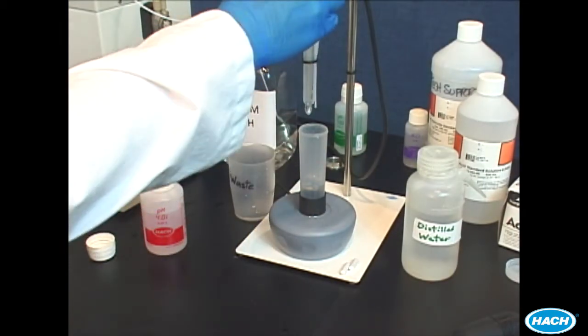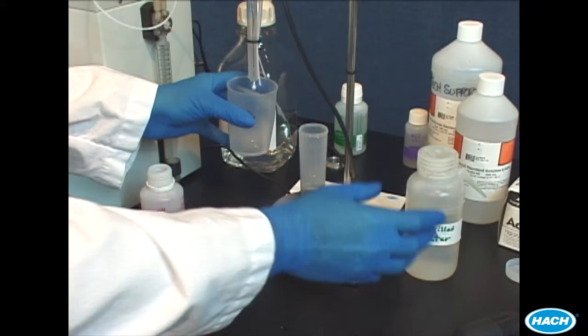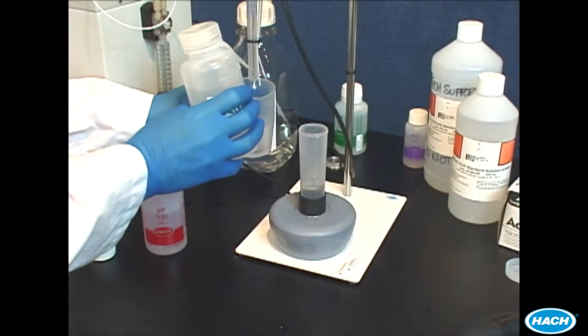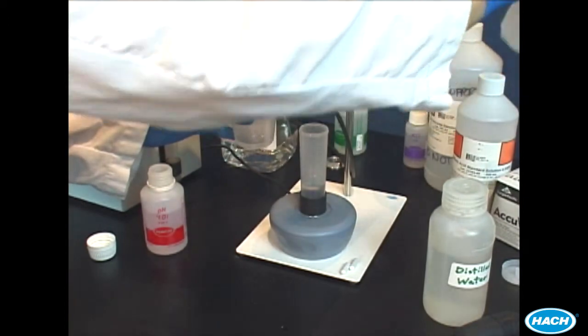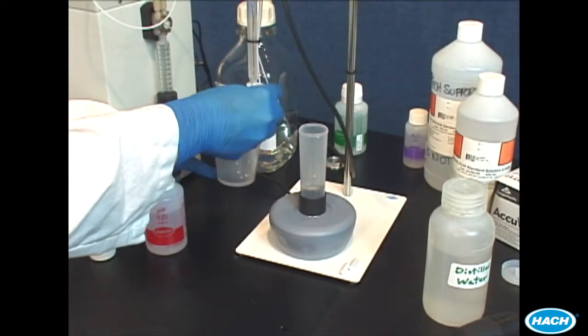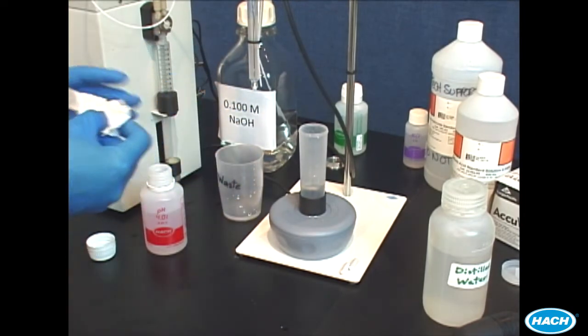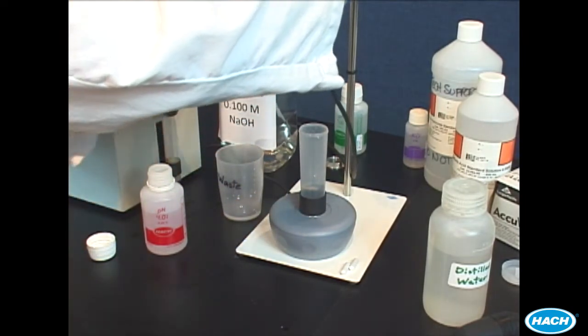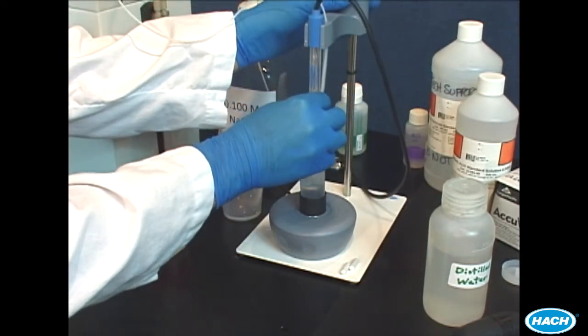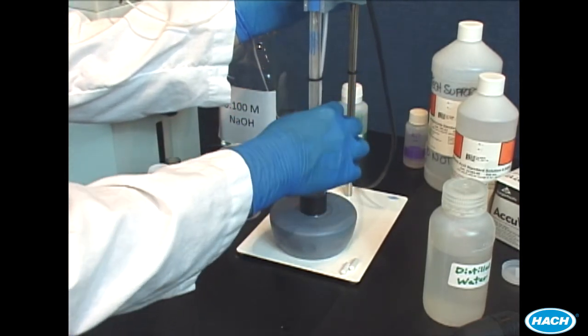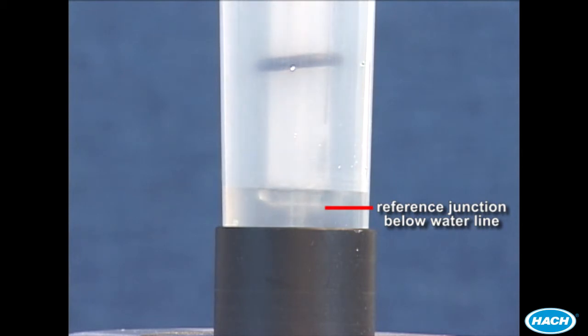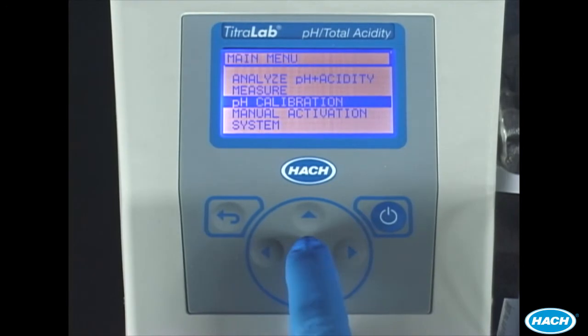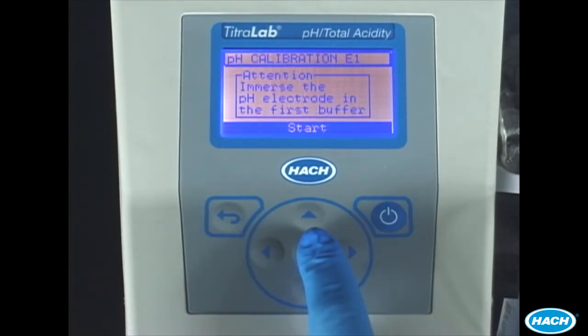Rinse the pH electrode over a waste beaker. Lower the electrode into the buffer. Be sure the electrode bulb is completely immersed in the buffer. Select pH calibration and then press the check mark to start the calibration.